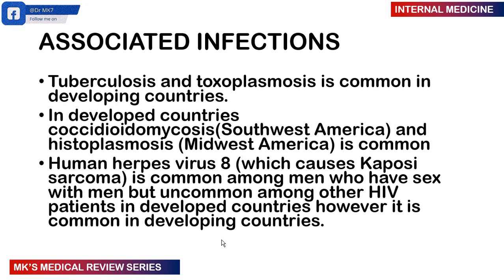The morphology of the virus: remember that this virus is actually spherical shaped. It's enveloped — it has an envelope that covers the capsid. In the core, that's where you have the genetic material. There are two identical strands of positive-sense RNA.